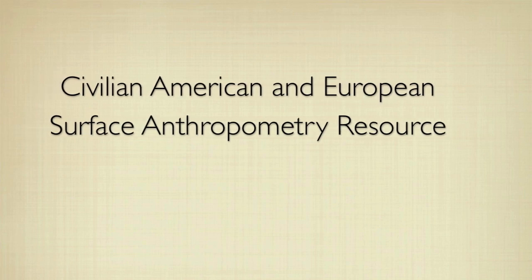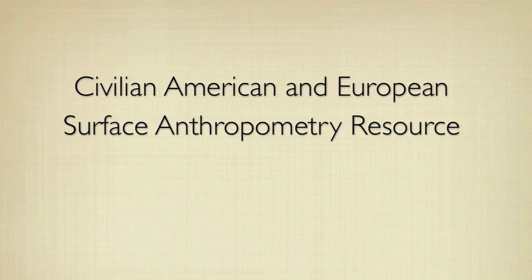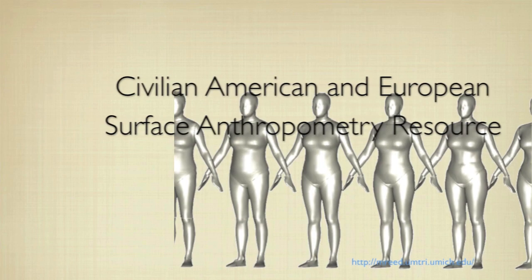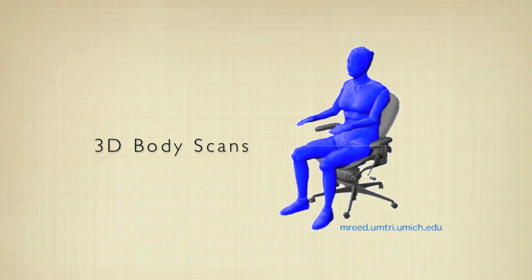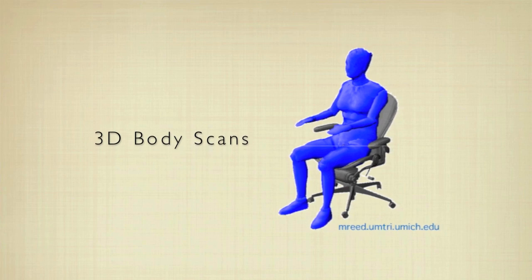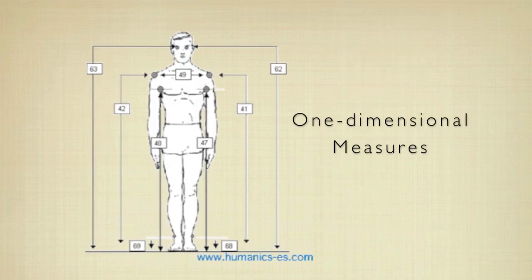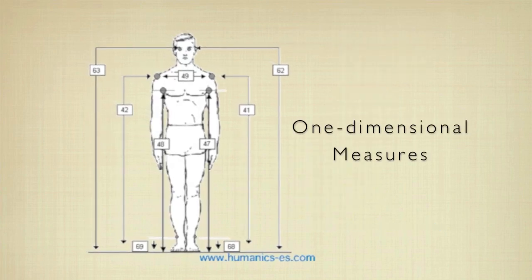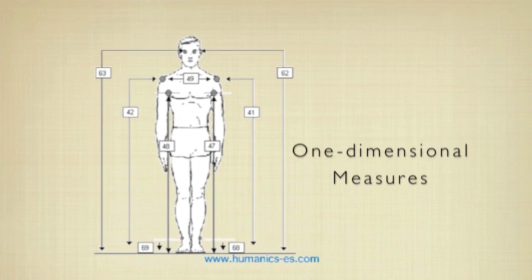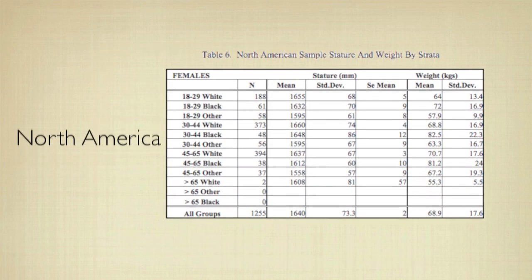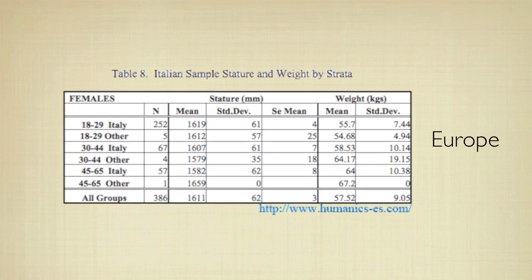The Civilian American and European Surface Anthropometry Resource, or CAESAR, is the first database to contain data from 3D body scans in addition to conventional one-dimensional measures. The sampled population comprises random North American and European volunteers, so CAESAR is not representative of any particular population.